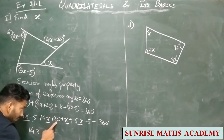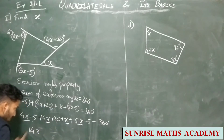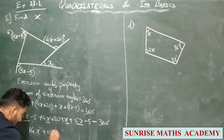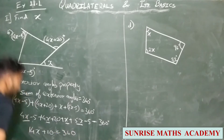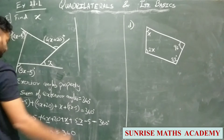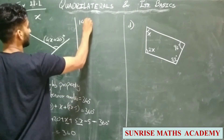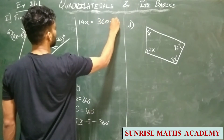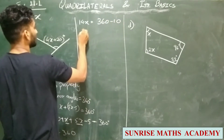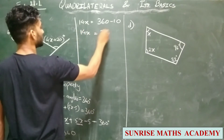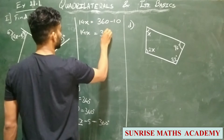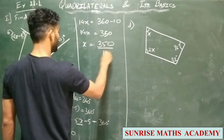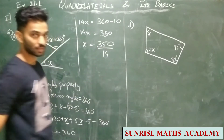The constants: −5 + 20 − 5 gives +10. So 14X + 10 = 360, which means 14X = 350. Therefore X = 350 ÷ 14, so X = 25.